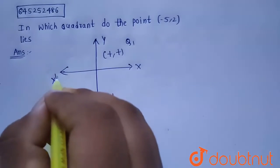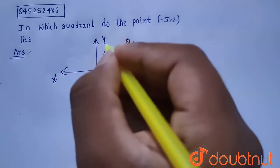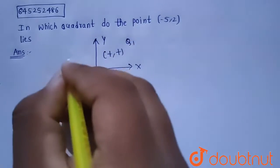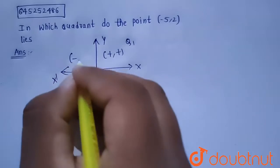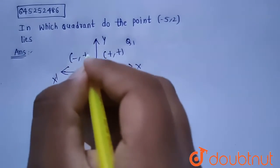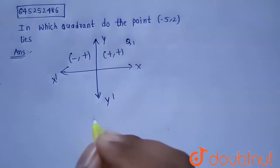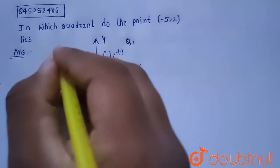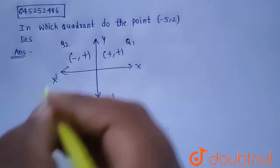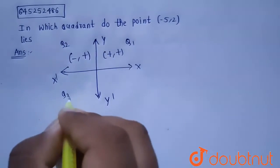In this case, the x-axis is negative and the y-axis is positive. So the x-coordinate will be negative and the y-coordinate will be positive. This is Quadrant 2.